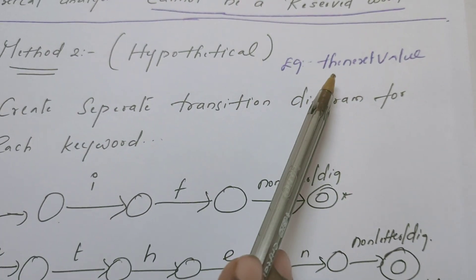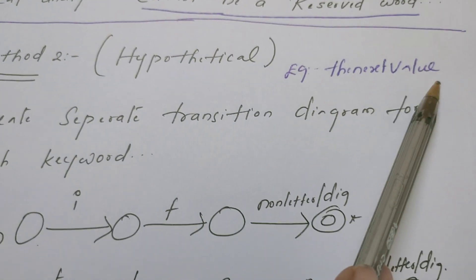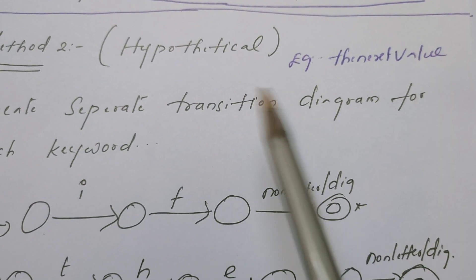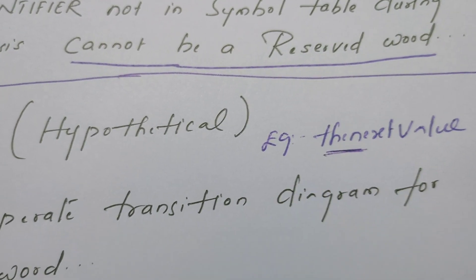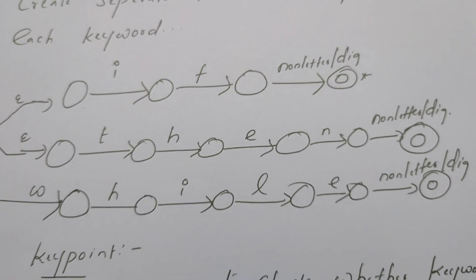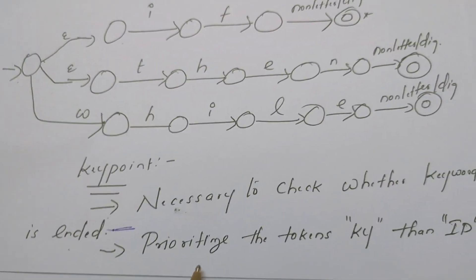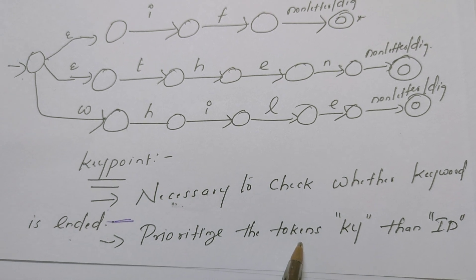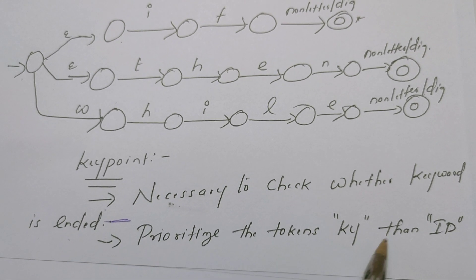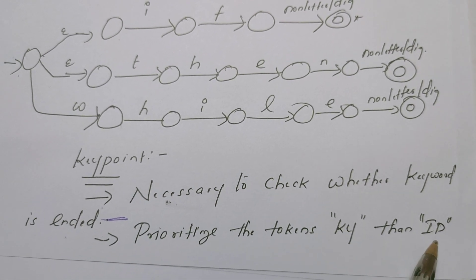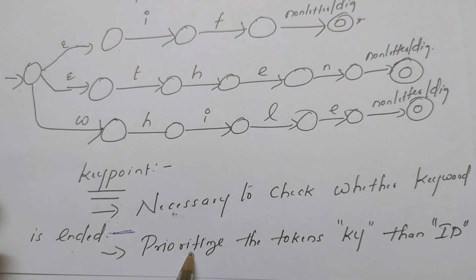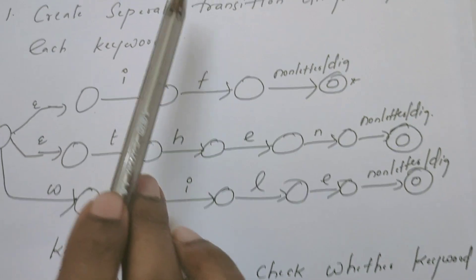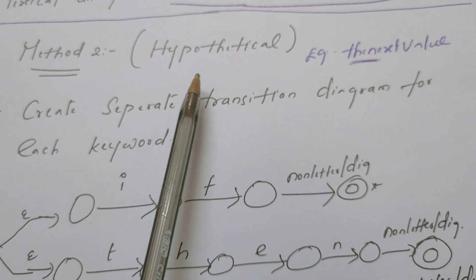For example, consider the lexeme 'next'. It is in fact an identifier, but its prefix is a keyword. In this case, the key point is we have to prioritize the recognition of keyword tokens over identifiers. These are the two key points to follow in method two, but this method is not implemented — it is just hypothetical.